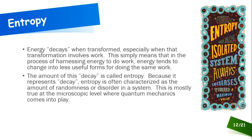Because entropy represents decay, people often describe it as the amount of randomness or disorder in a system — decay is the process of something becoming more disordered. Much of the randomness or disorder introduced to a system in the form of entropy happens at the microscopic level, making entropy somewhat abstract and difficult to visualize.